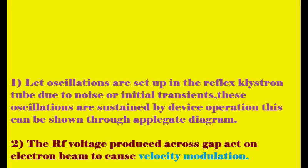Oscillations are set up in the reflex klystron tube due to noise or transients, and these oscillations are sustained to produce microwave oscillations. Every device has noise transients — when you switch something on or off there will be a slight transient. We consider that oscillations are initially induced because of these transients, which we analyze using the Applegate diagram.